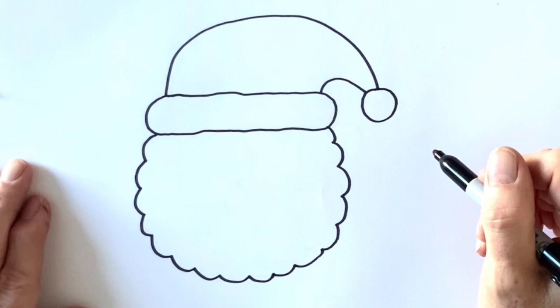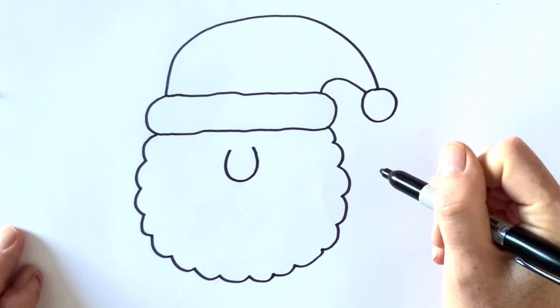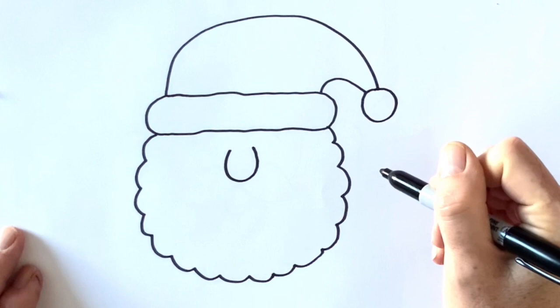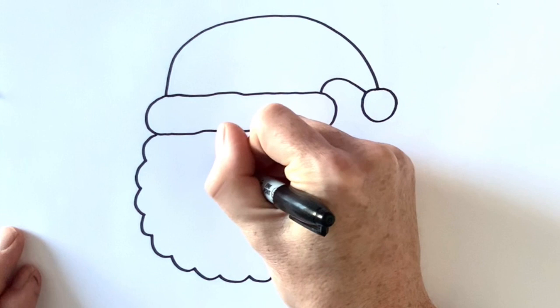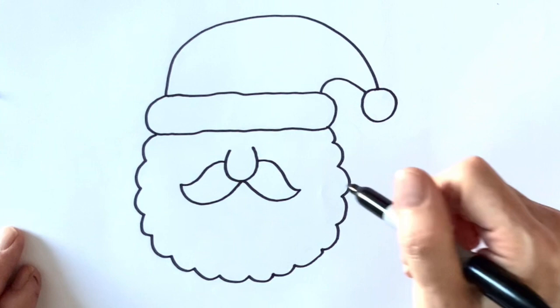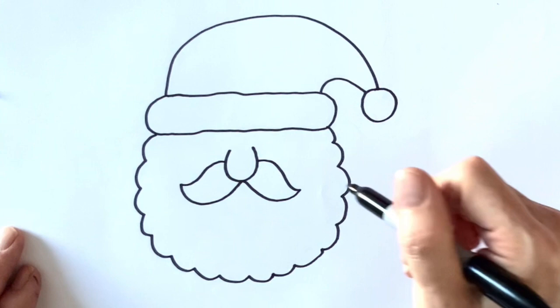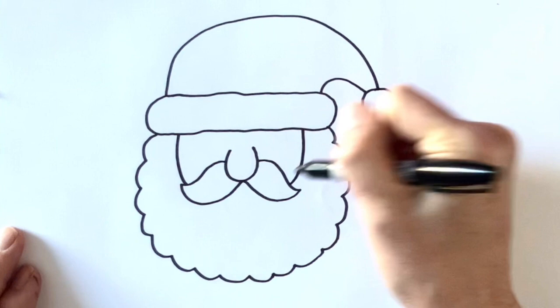And then here I'm going to draw a horseshoe shaped nose and then I'm going to add a mustache made out of two halves. One half here and one half here. And then I'm going to add two curvy lines going down to touch the mustache, one there and one there to finish off his beard. So we've got his mustache and his beard.